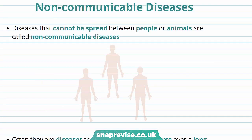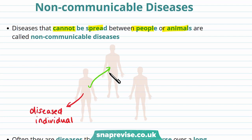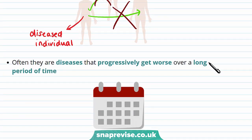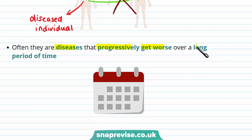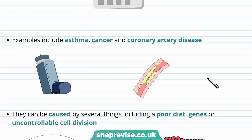Diseases can also be non-communicable. Non-communicable diseases are diseases that cannot be spread between people or animals. Non-communicable diseases progressively get worse over long periods of time, meaning that people get more ill every day. Some examples of non-communicable diseases include asthma, cancer and coronary artery disease. Asthma may make it difficult for a person to breathe, requiring the use of an inhaler. Coronary artery disease may cause heart attacks or chest pain.